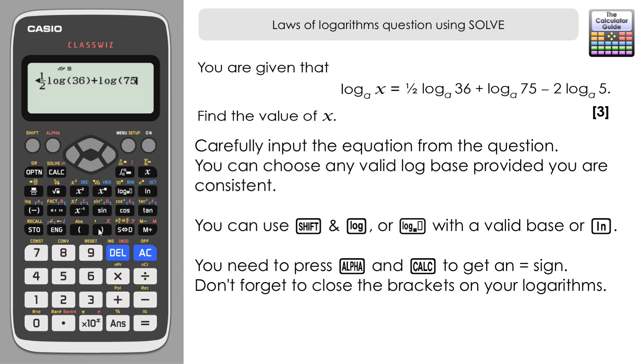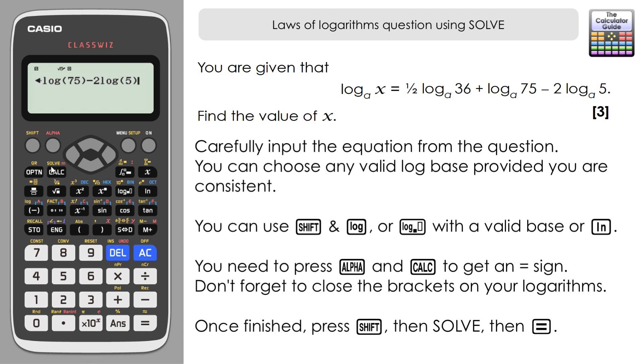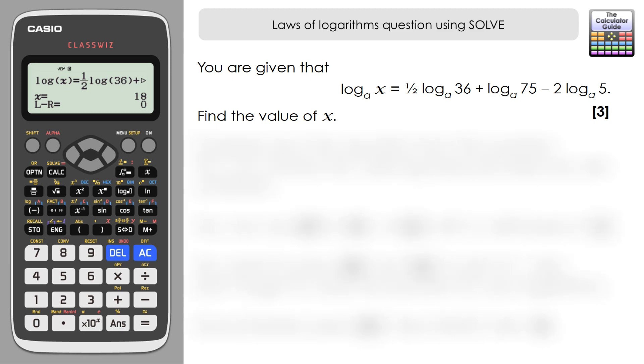Once that's been inputted, you need to press shift and then SOLVE, and it will say x equals and then either zero or your previously stored value of x. We just need to press equals again to confirm that we want to solve this for x. Here we have a solution: x equals 18. I'm going to make a note of that and put it in a little bubble. I'm going to reference that later once I've done my written solution.